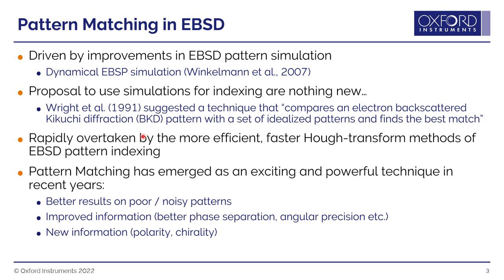That more efficient method is using the Hough transform to pick out the Kikuchi bands. The Hough transform, or variants of it, are what are used in all commercial systems to this day. However, pattern matching in the last six or seven years has emerged as a quite exciting and powerful technique in the EBSD community, in particular because it can get better results than very poor quality or noisy patterns, improving face separation, angular precision, or even extracting new information such as polarity or chirality of certain phases.